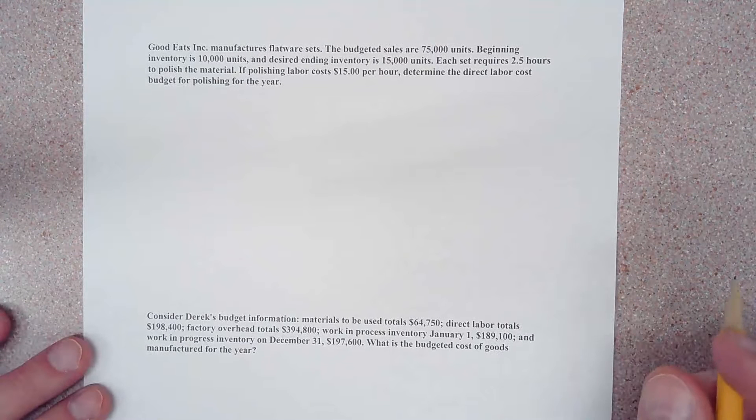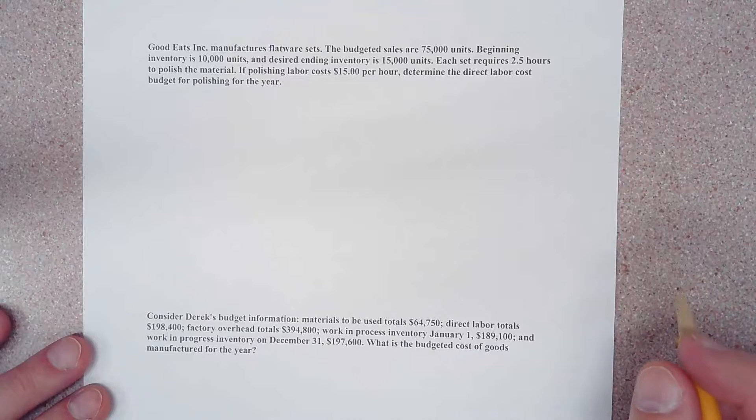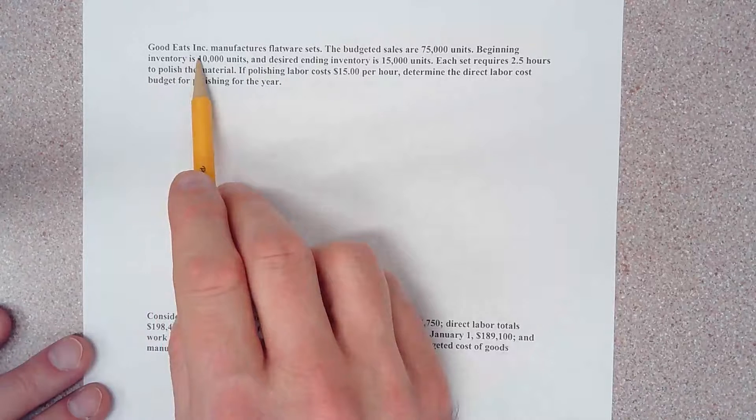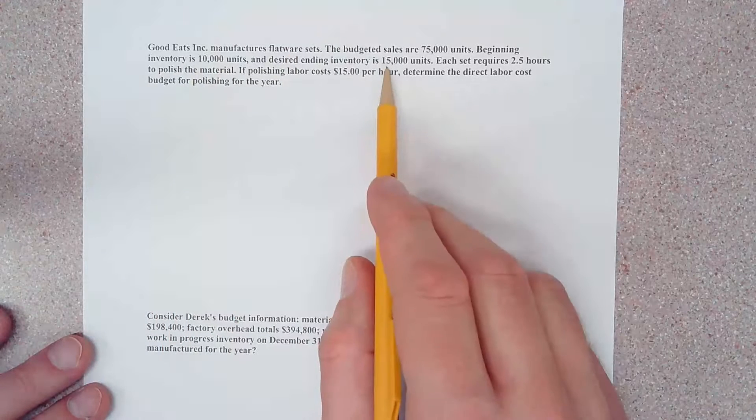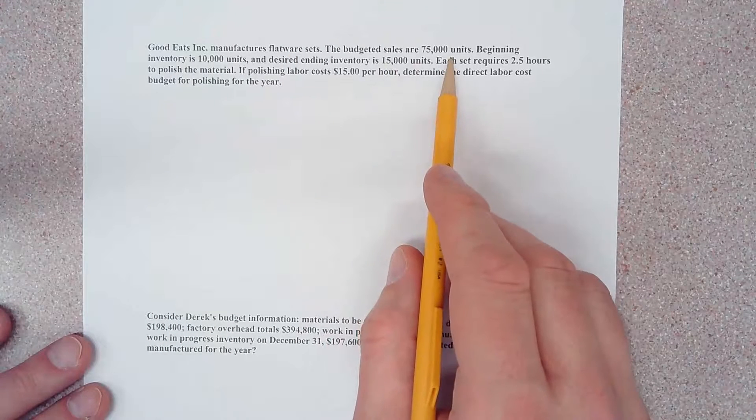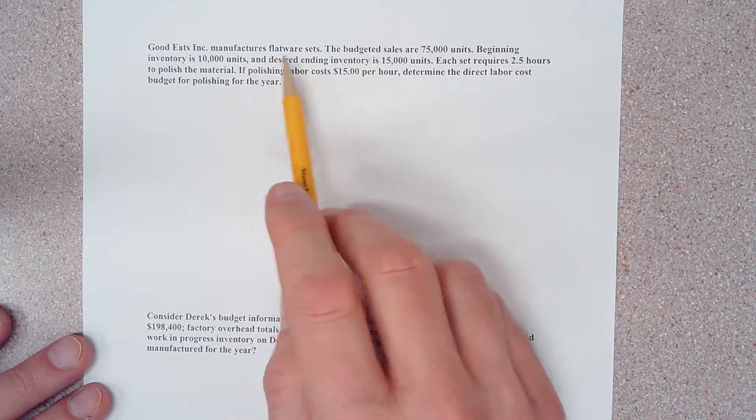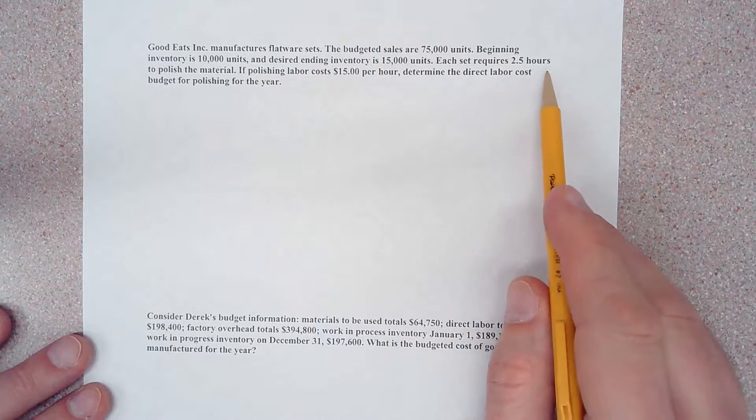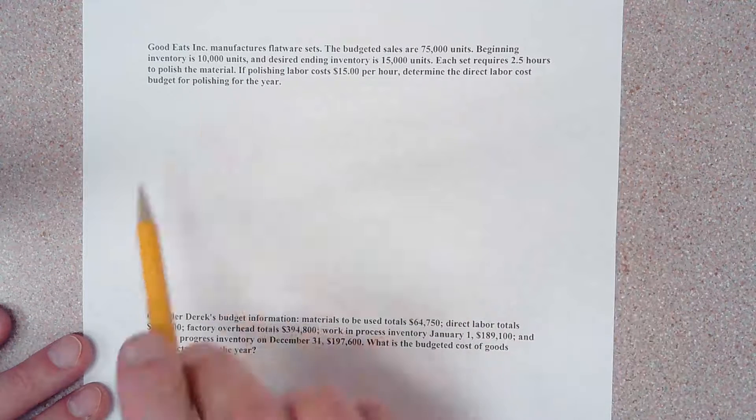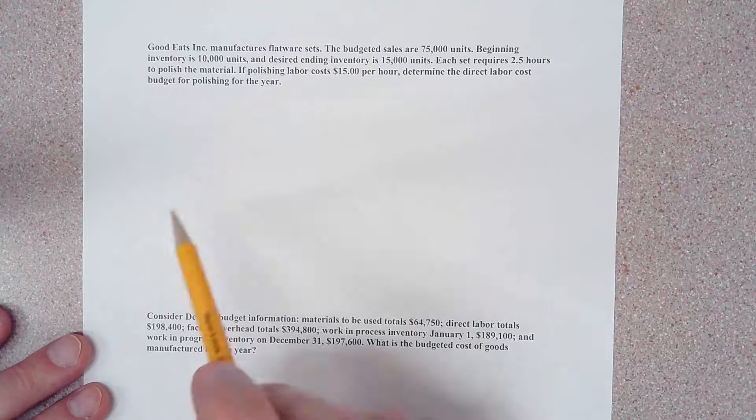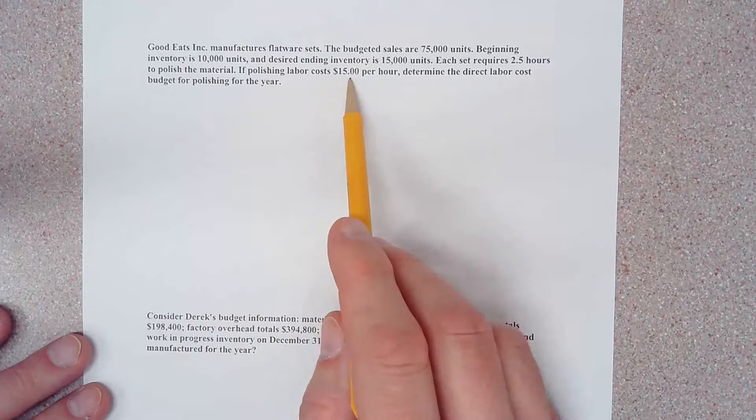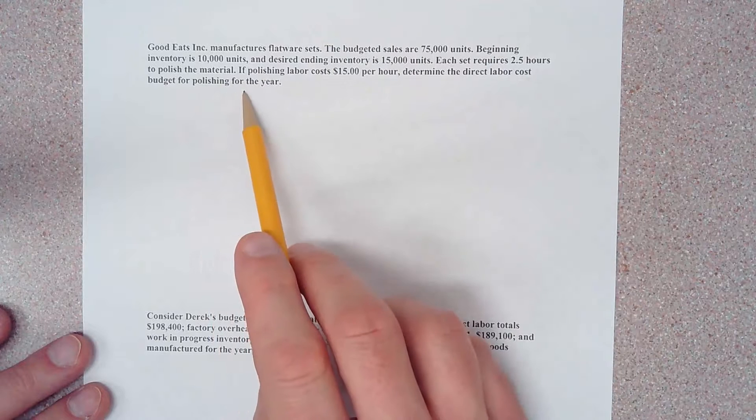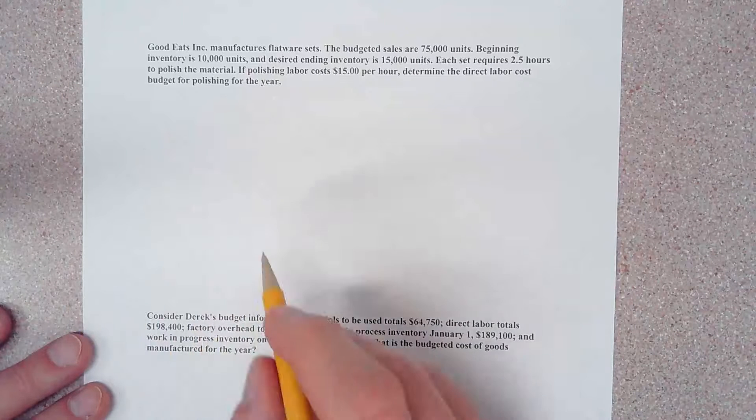Alright, it looks like we have a question about direct labor cost budgets here. Good Eats Incorporated manufactures flatware sets. Budgeted sales are 75,000 units, beginning inventories 10,000 units, and desired ending inventories 15,000 units. Each set requires 2.5 hours to polish, and polishing labor costs $15 per hour. Determine the direct labor cost budget for polishing for the year. Okay, so actually a pretty simple question.